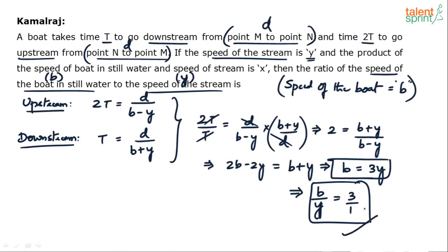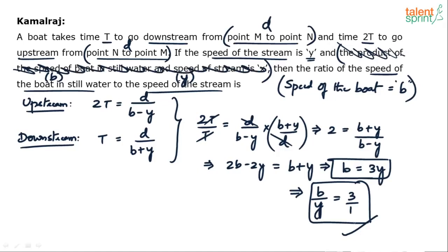You might be wondering about the statement that the product of the speed of the boat in still water and the speed of the stream is x. That information is not required — it is irrelevant to solving this question. Don't get confused; we directly get the ratio as 3 : 1.